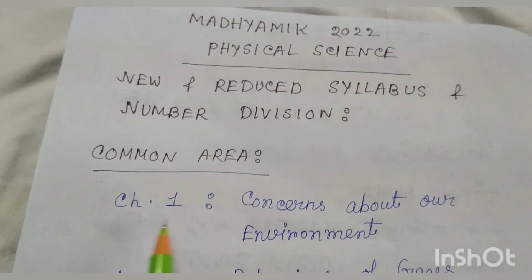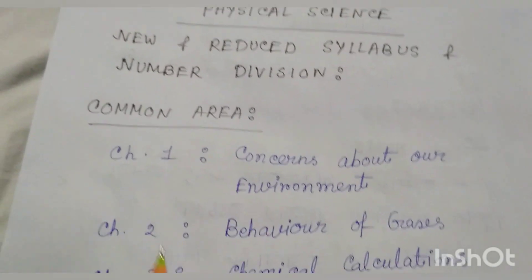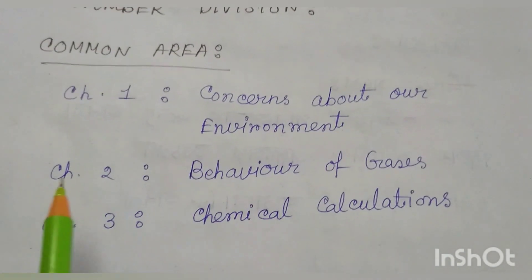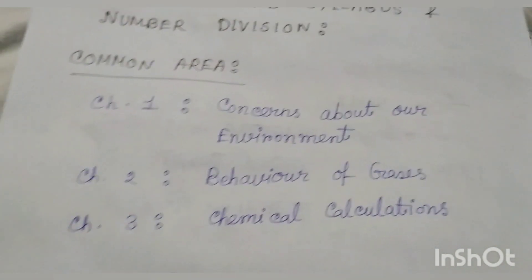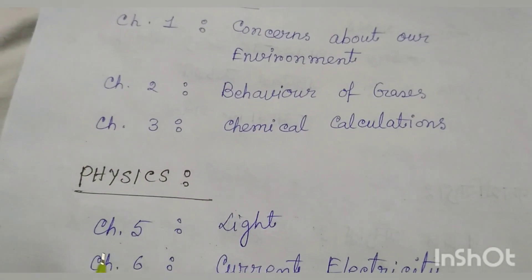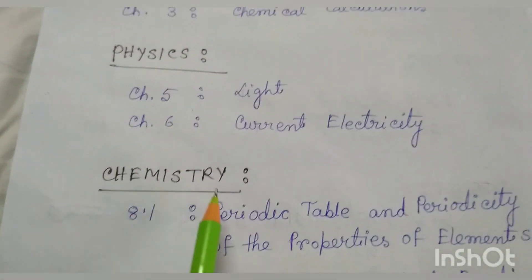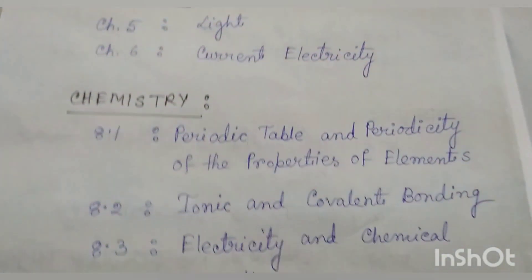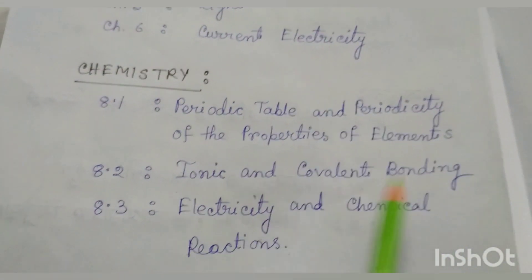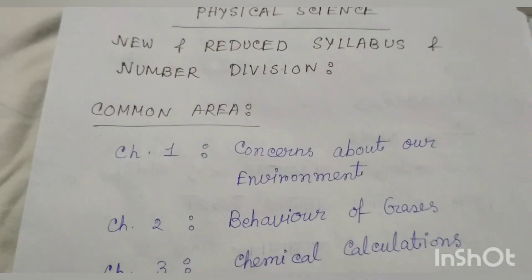First, Common Area Chapter 1: Concerns About Our Environment. Chapter 2: Behavior of Gases, and Chapter 3: Chemical Calculations. Next, Physics Chapter 5: Light, and Chapter 6: Current Electricity. Chemistry Portion: 8.1 Periodic Table and Periodicity of the Properties of Elements, 8.2 Ionic and Covalent Bonding, 8.3 Electricity and Chemical Reactions. Now I discuss with you the Number Division.